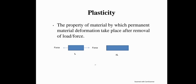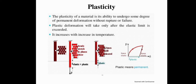Plasticity is the property of material by which permanent deformation takes place after removal of load or force. When we apply a force on a material and the material changes in its length, and when we remove that force the material does not come back to its original shape — this property is known as plasticity. The plasticity of a material is its ability to undergo some degree of permanent deformation without rupture or failure. Plastic deformation will take place only after the elastic limit is exceeded, and it increases with increase in temperature.